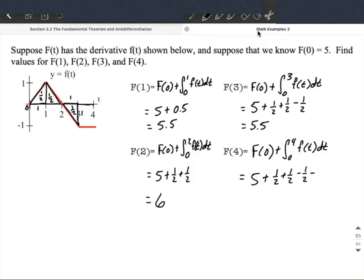We have a square between 3 and 4 down to -1. Base times height gives an area of 1 to subtract. So we have 5 + 1/2 + 1/2 - 1/2 - 1, which equals 4.5.